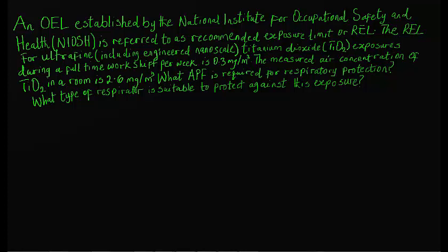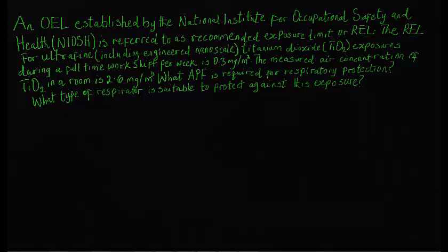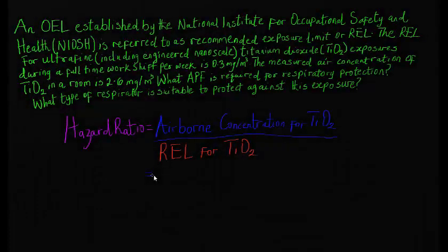What APF is required for respiratory protection? What type of respirator is suitable to protect against this exposure? To determine the hazard ratio for this exposure, divide the measured airborne particle concentration for titanium dioxide by its OEL — in this case, the REL for titanium dioxide.